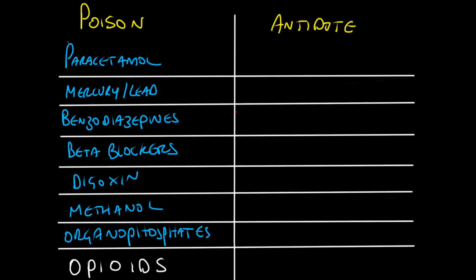For paracetamol, you would treat with acetylcysteine — also abbreviated to NAC for N-acetylcysteine. What it does is increase the metabolism of the drug by restoring your glutathione stores within the liver.